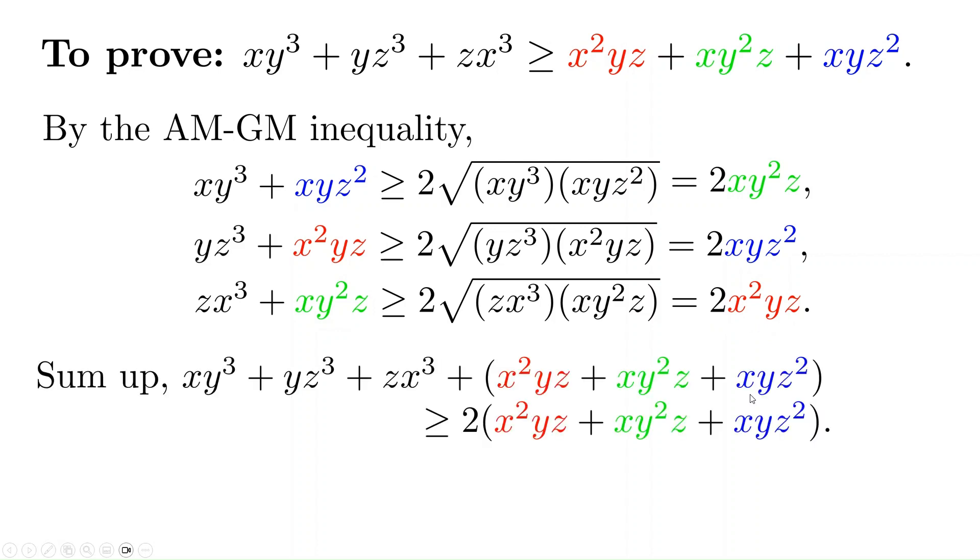Sum up. So we have xy³ + yz³ + zx³ plus the three terms on the right-hand side of the target inequality is ≥ 2 times the right-hand side of the inequality. After cancellation, the inequality is established.